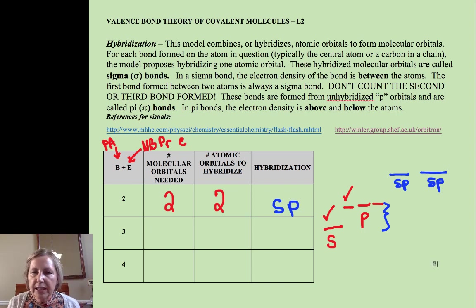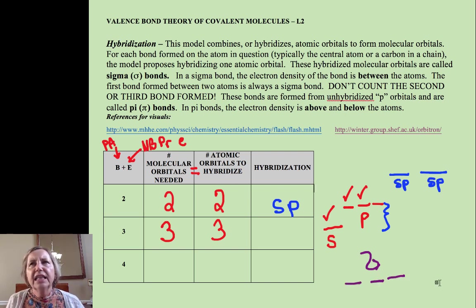I'm going to show you a great website on this in just a minute. Now if B plus E is three, I need three molecular orbitals. My number of atomic orbitals is three. We're going to hybridize one atomic for every molecular we need. So this time we have to add another P.